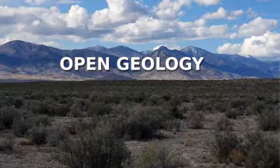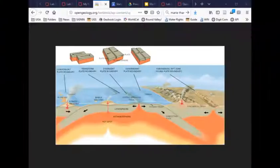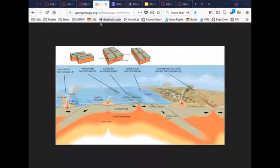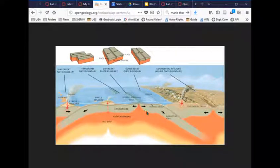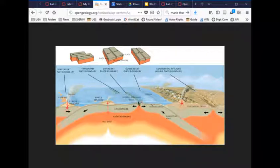There are three major types of boundaries: divergent, convergent, and transform. Divergent boundaries are areas where new plate is being created. These happen along long volcano-type mountains.